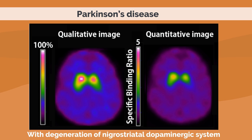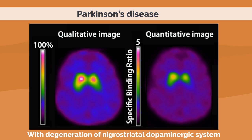First, we show images of movement disorders in which degeneration of the nigrostriatal dopaminergic system is present. In Parkinson's disease, striatal accumulation is asymmetrically reduced with dorsal predominance. Quantitative images show that the specific binding ratio of the striatum declines with disease progression.